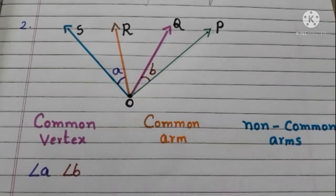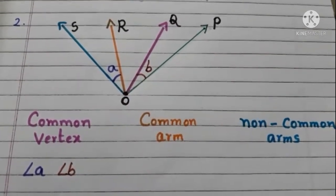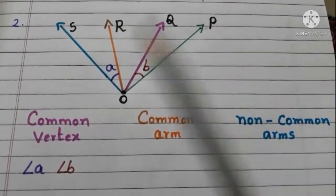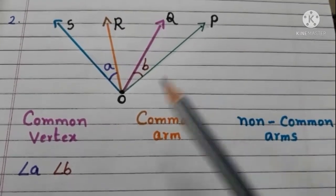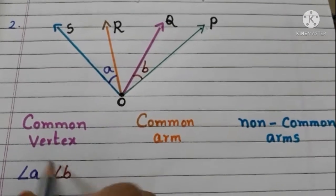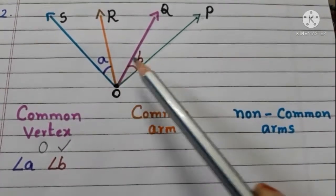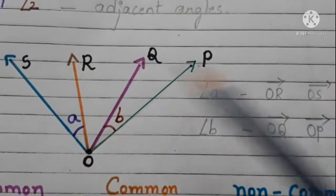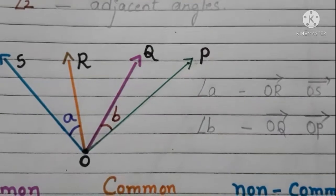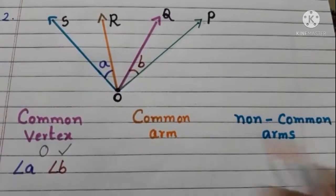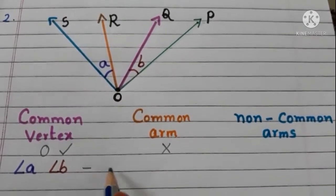Now let us see another figure. Here, A and B are two angles and we have to check whether A and B are adjacent angles or not. For adjacent angles, there are three rules, and angles A and B should satisfy all three. What is the common vertex for A and B? It is O. First condition is satisfied. What is the common arm for angle A and B? Angle A is formed by the rays OR and OS, and angle B is formed by the rays OQ and OP. So, here there is no common arm — the second condition is not satisfied. Therefore, we can say that angles A and B are not adjacent angles.